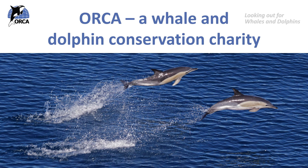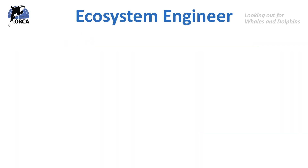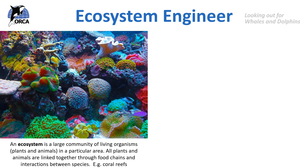Have you ever heard of the term ecosystem engineers before? Let's split this term into the two words separately first. So first of all, ecosystem. An ecosystem is a large community of living organisms — animals and plants — in a particular area. All plants and animals in this area are linked together through food chains and interactions between species. A good example of an ecosystem is a coral reef.